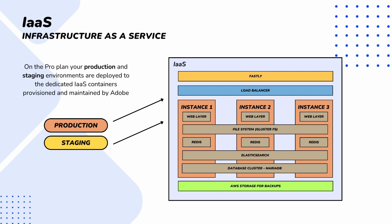So what do we actually get in terms of infrastructure? We can imagine this as a box that contains three server instances and some other tools around it. Each instance has a copy of Magento and some additional tools — for example, instance one has a web server with Redis. The filesystem, Elasticsearch, and database cluster are shared between all three instances. At the bottom you can see a green box with AWS storage for backups — that's where backups are stored. At the top you have a load balancer and Fastly. This is everything you get in terms of infrastructure, and this box is what is deployed to Adobe Commerce Cloud.